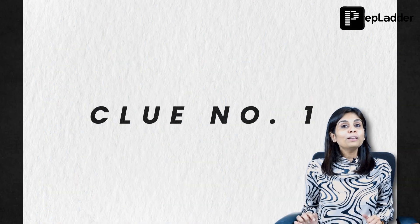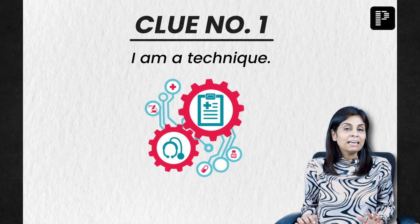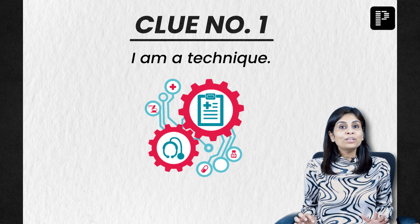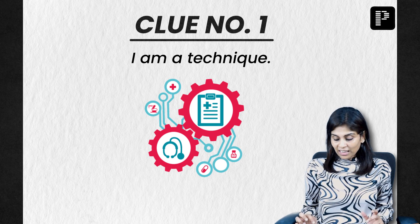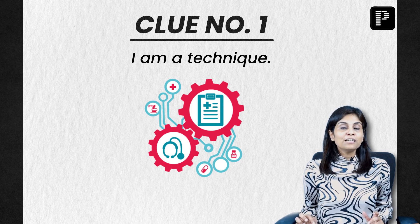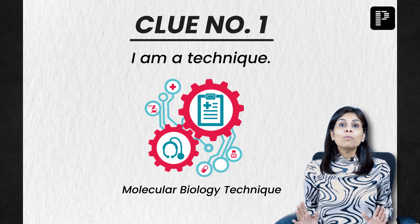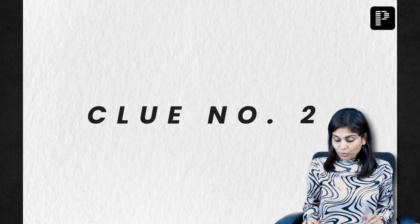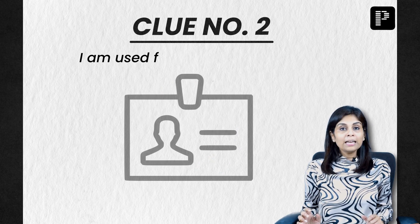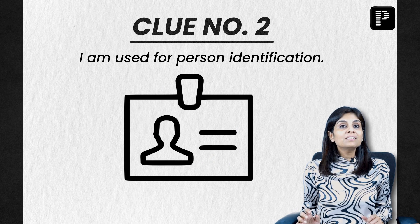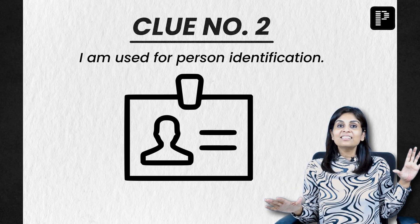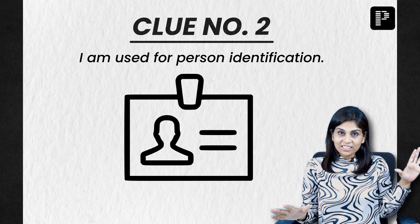Clue number one for this question is: I am a molecular biology technique. Clue number two is: I'm used for person identification. If you know the right answer, type your answer in the chat box.